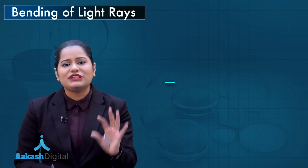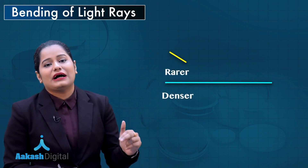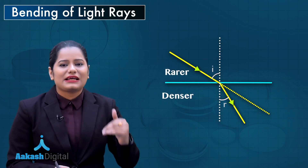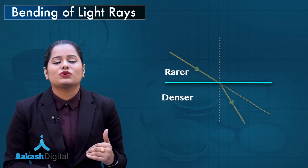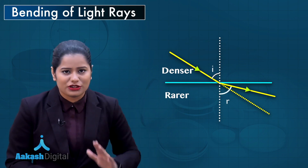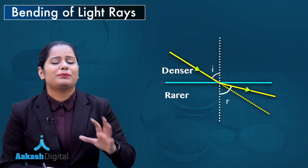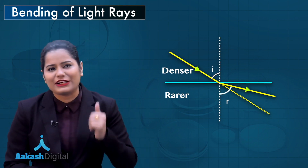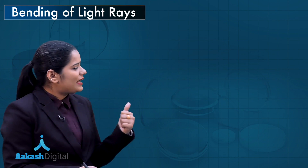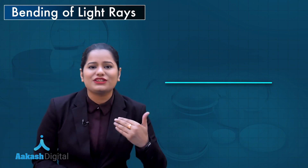In class 10th, you have been taught that whenever light rays go from a rarer to a denser medium, they bend towards the normal, and if the light ray goes from the denser to the rarer medium, it bends away from the normal. But you have not been given the perfect explanation for this bending of light rays, which I am going to share with you now.